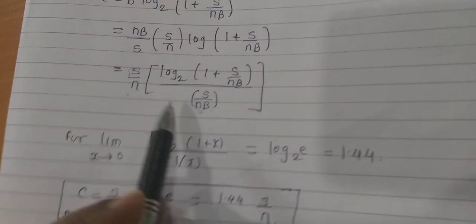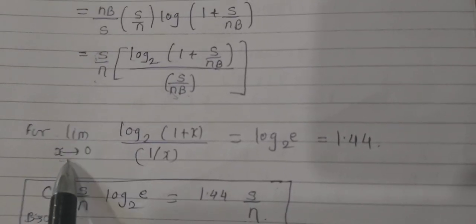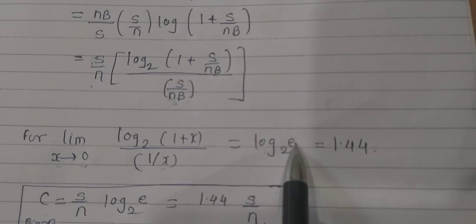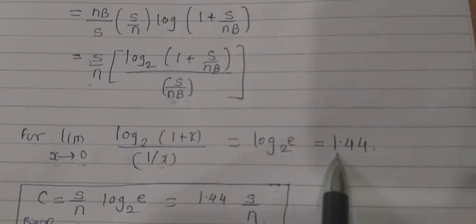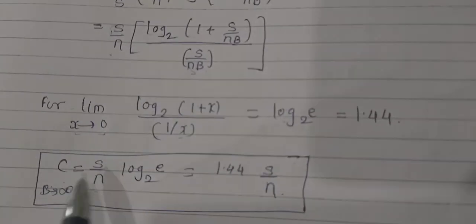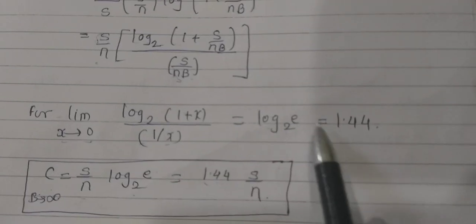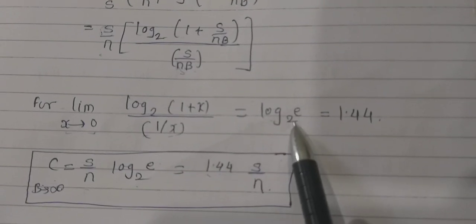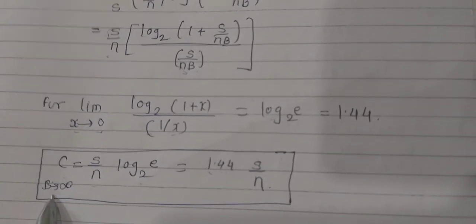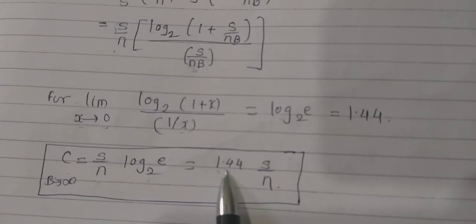Using the limit as B → ∞: lim log₂(1 + S/(ηB)) = log₂(e) = 1.44. So the channel capacity becomes C = (S/η) × log₂(e) = 1.44 × S/η. Therefore, as bandwidth tends to infinity, the channel capacity is limited to 1.44 S/η.